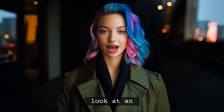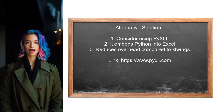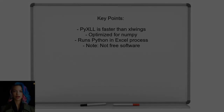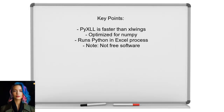Let's take a look at an answer from another user. An alternative approach to improve the speed of Excel Wings UDFs is to consider using PyXLL instead. PyXLL is an add-in that embeds Python directly into Excel, which significantly reduces the overhead of communication between Python and Excel. PyXLL is reported to be much faster than Excel Wings, especially for NumPy operations, as it runs Python in the Excel process itself. However, keep in mind that PyXLL is not free software.